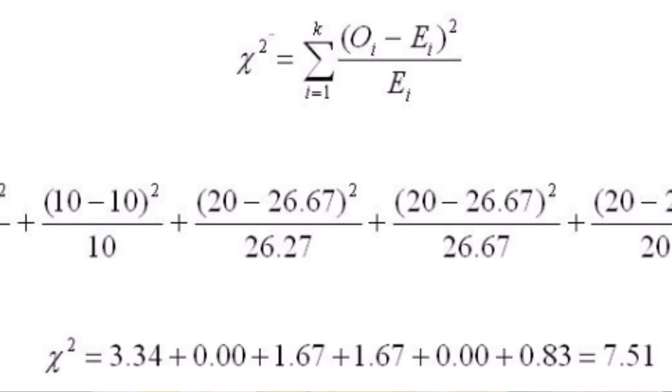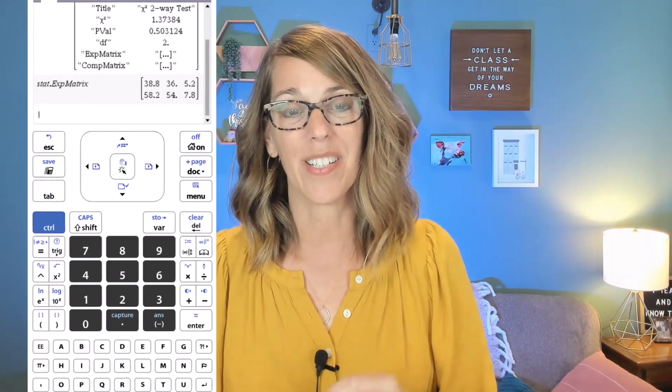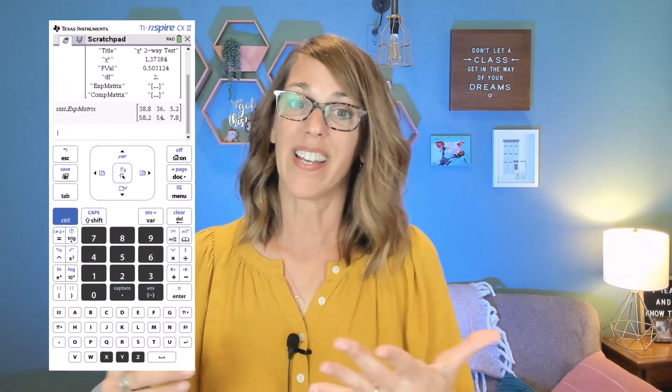There's a much better way of doing a chi-square test of independence than using the formula. I'm going to show you how to do that with your TI-Inspire calculator. I'm using my CX2 today, but the CAS will also work just great.